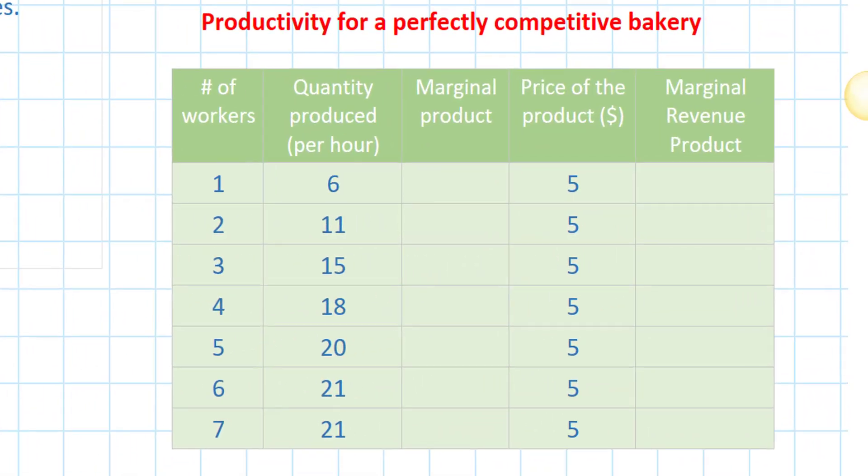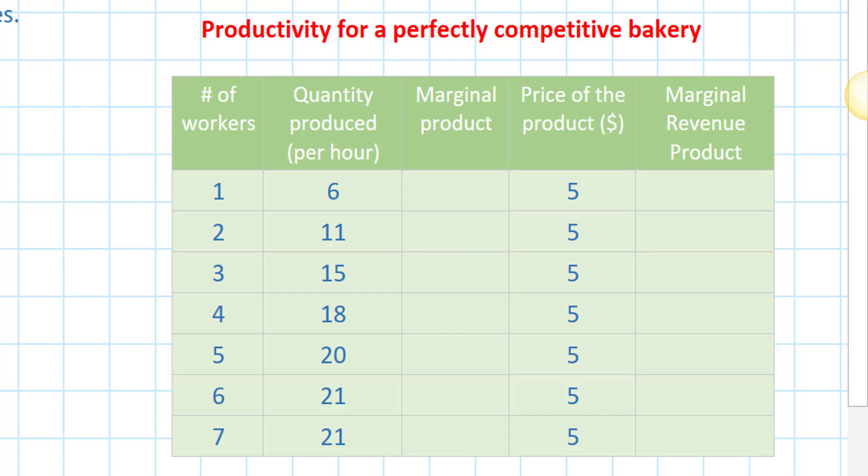A perfectly competitive bakery can sell each loaf of bread it produces for a market price of five dollars. What we're going to do is determine this individual baker's demand for labor by comparing the marginal product of labor — how much bread each additional worker the bakery hires produces — and multiplying that by the price the bakery can sell each loaf of bread for.